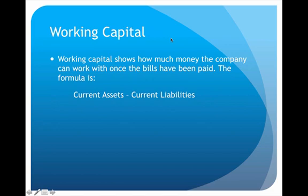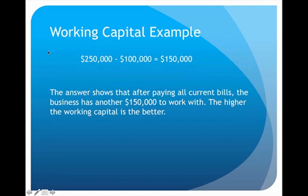The next financial ratio is called working capital, which shows us how much money we have to work with. The formula is current assets minus current liabilities. If a company has $250,000 in current assets minus $100,000 in current liabilities, that leaves $150,000 in working capital. We want this answer to be as high as possible — the higher it is, the more money we have to work with.